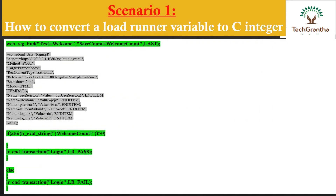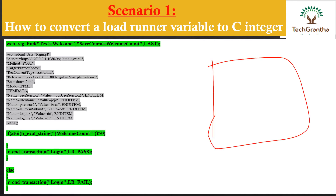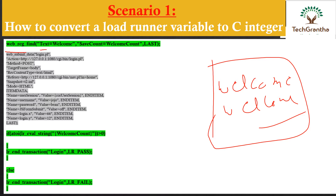For example, suppose there is a UI page where the word 'Welcome' appears — it might appear one time or multiple times, like four or five times. What I did was capture that 'Welcome' text using the web_find function with text equal to 'Welcome'. Then I used the save_count function, which saves the count of how many times 'Welcome' appeared on the page into a parameter.